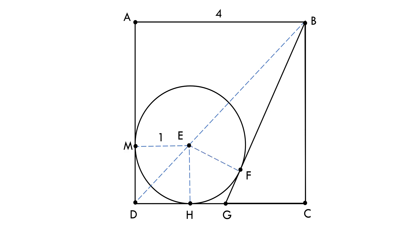Let's join points E and F. EF will be perpendicular to BG as the line joining center of the circle and tangent point is perpendicular to the tangent line.